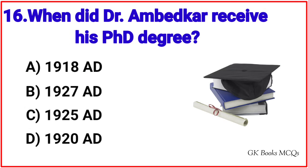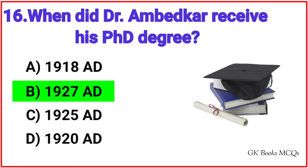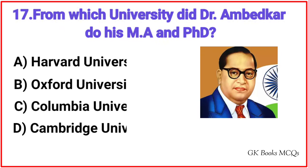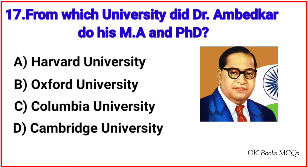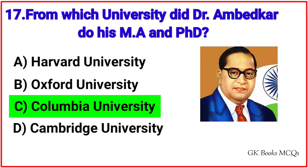Question number 16: when did Dr. Ambedkar receive his Ph.D. degree? Correct answer is option B, 1927 A.D. Question number 17: from which university did Dr. Ambedkar do his M.A. and Ph.D.? Correct answer is option C, Columbia University.